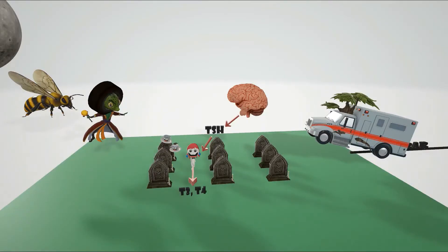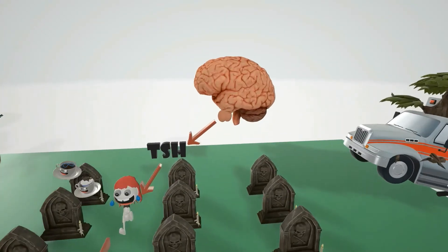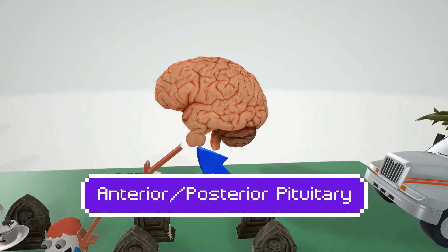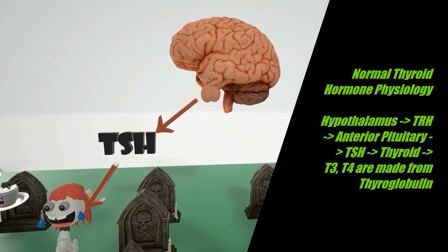We're going to begin this discussion with the process of thyroid hormone. Looking at this brain floating on top of the graveyard, we see the anterior and posterior pituitary enlarged to show what's happening. The hypothalamus, in response to low levels of thyroid hormone, releases thyrotropin-releasing hormone, which stimulates the anterior pituitary to release thyroid stimulating hormone.